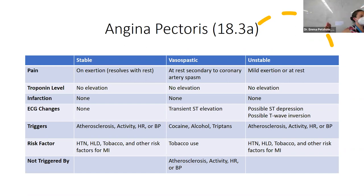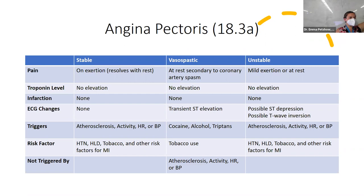The best way to separate them: vasospastic angina is triggered by cocaine, alcohol, triptans, and has a big risk factor of tobacco use — think social history factors. Stable and unstable are triggered by typical coronary artery disease risk factors. All three have tobacco as a risk factor. Key summary: stable resolves with rest; vasospastic is due to coronary artery spasm with social history etiologies; unstable does not resolve with rest and leads toward myocardial infarction.